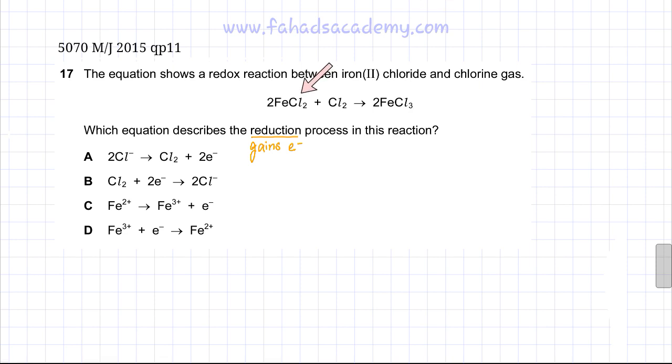If you would notice chlorine over here, chlorine is in group 7, so that would be minus 1. And since there are 2 chlorines, there would be 2 minus 1 ions over here.